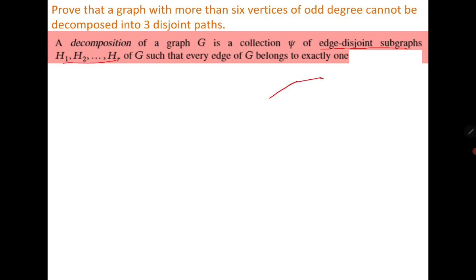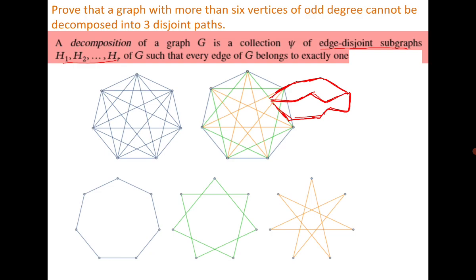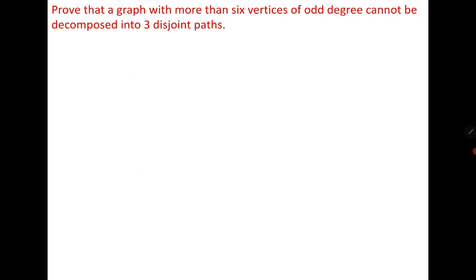For example, if I draw this graph, it has 3 edge-disjoint paths such that the union of these paths is the original graph, but none of the edges are repeated in any of the paths — that is why they are edge disjoint. This is K7, and we can see that they are edge-disjoint subgraphs of K7. The problem is that a graph with more than 6 vertices of degree 4 cannot be decomposed into 3 disjoint paths.